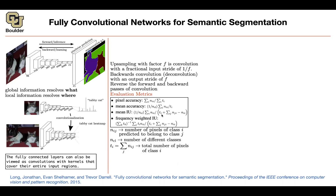For intersection over union: the intersection is n_ii, and the union is t_i plus the sum over j of n_ji, minus n_ii (subtracting the diagonal counted twice). Mean IoU averages this over all classes. For frequency-weighted IoU, instead of weight 1/n_classes per term, you use t_i divided by the sum of all t_k as your weight. This is better when your data is imbalanced across classes.